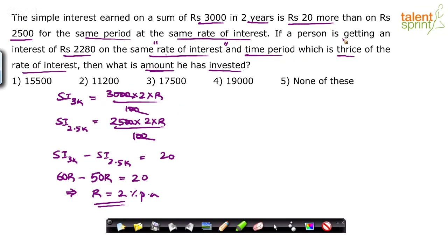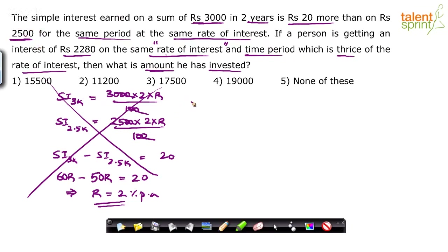Now, you can avoid that lengthy process. Instead of doing all that, simply understand that in case 1 the principal is 3000 and in case 2 the principal is 2500. Since the same rate of interest and same time period is used in both cases, instead of taking the difference of interest as rupees 20, you can say the interest on the difference of the principals — which is 500 rupees — is equal to 20. So, simple interest on 500 rupees for two years is 20.